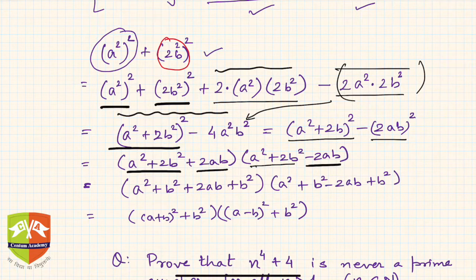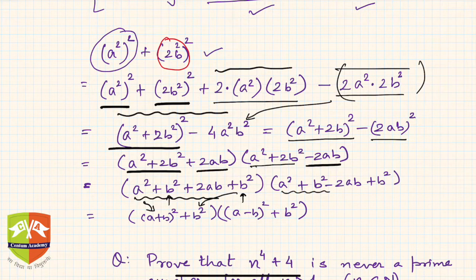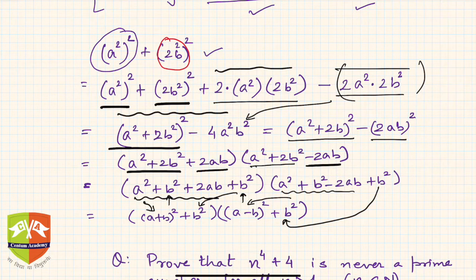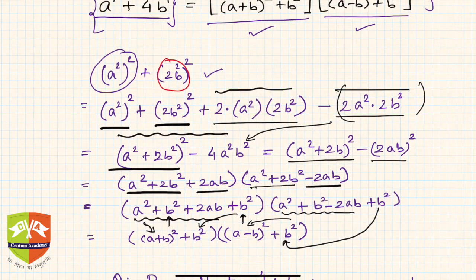Now if you see, there is a square of a binomial here. If you split 2b squared into b squared and b squared, then a squared plus b squared plus 2ab becomes (a plus b) whole squared, with the remaining b squared as a separate term. Similarly, a squared plus b squared minus 2ab becomes (a minus b) whole squared, with that b squared also coming along.